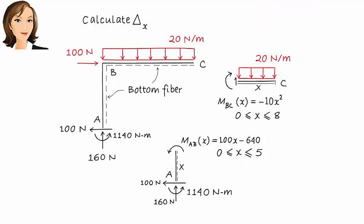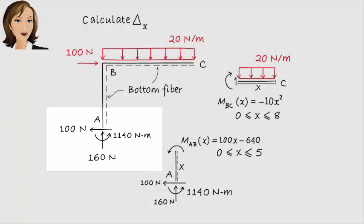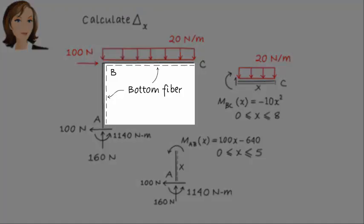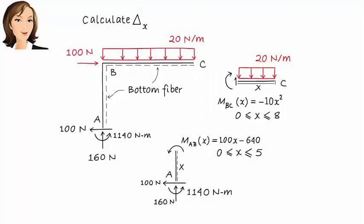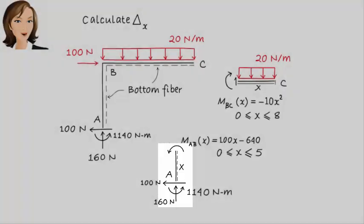Let me explain what we have here. Here we have the support reactions of the statically indeterminate frame. Since we are going to write the moment equations for the frame members, we need to identify a bottom fiber for each member. This has to be done for the sake of consistency when using the beam sign convention. To write the moment equation for member AB, we are going to cut the member at some distance x from point A, like this.